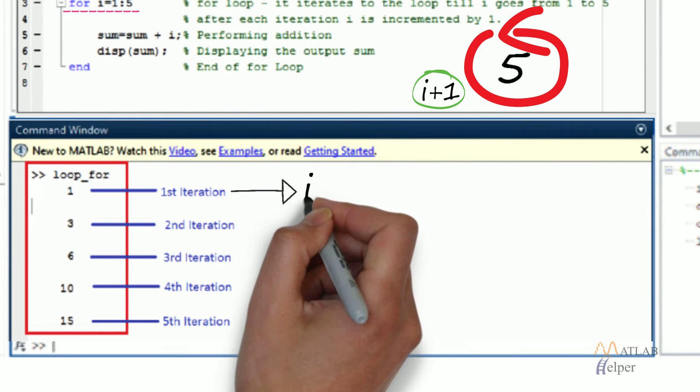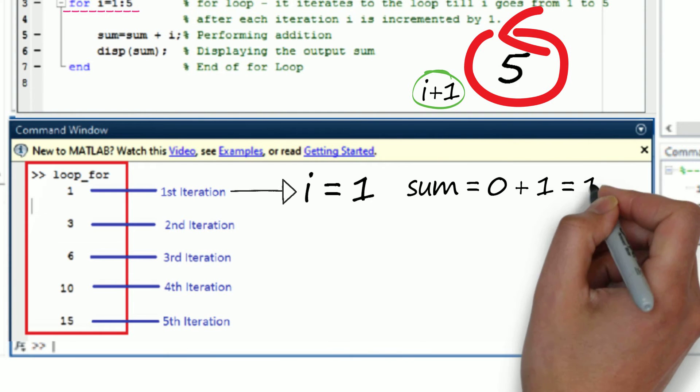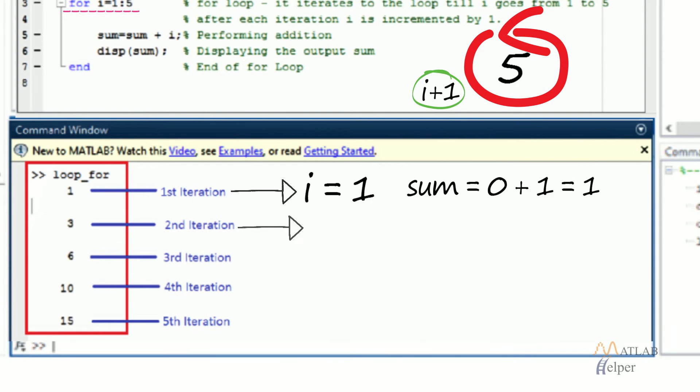So in the first iteration the value of i is 1, so sum is 0+1=1. Similarly in the next iteration the value of i will be 2, so sum is equal to 1+2, that is equal to 3.